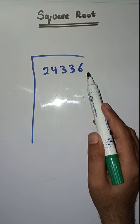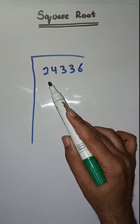So, what will we do? First, we have to make pairs from right to left like this.